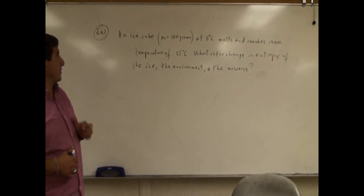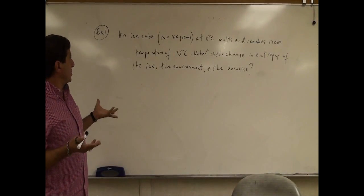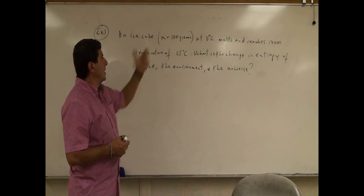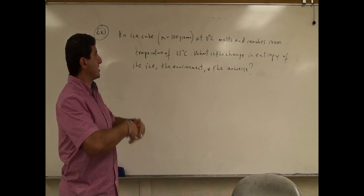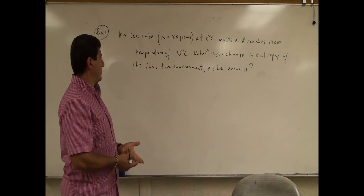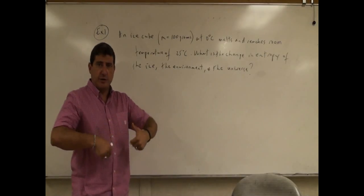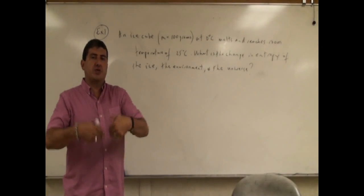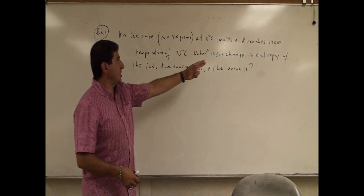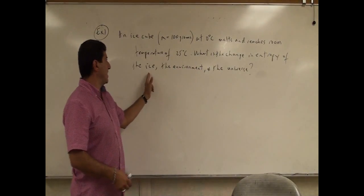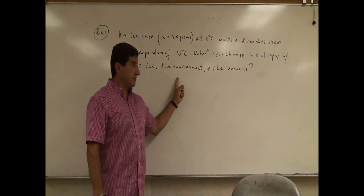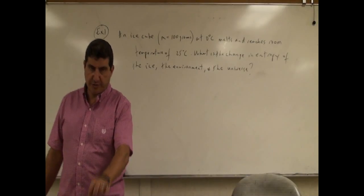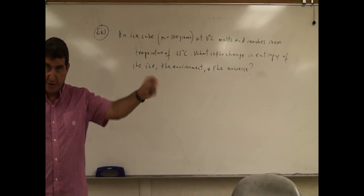Now I have my first example on entropy. It's a pretty common example. An ice cube, 100 grams at zero degrees, melts and reaches room temperature. So you place it on the table or somewhere in the room, and the ice will naturally melt. What is the change in entropy of the ice, the environment, and the universe?